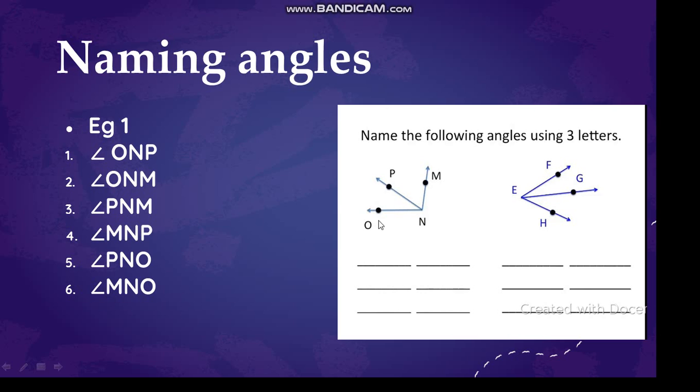So here you have only one vertex, that is N. So in all the angles, N is in the middle. The vertex will always come in middle. Angle ONP, then angle PNM, then angle MNO, MNP, then you have PNO. So six names you can give the angles using this.